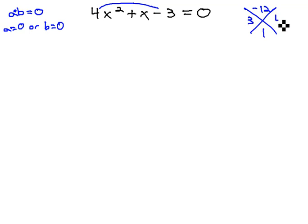The pair of numbers that makes this work are 3 and 4 if the 3 is negative. So we will split up the middle term, the x, into negative 3x plus 4x.